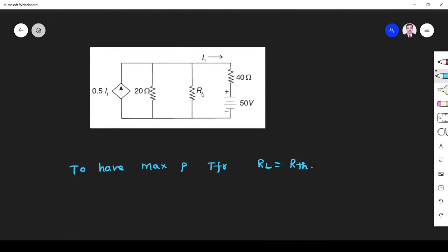So when you want to find R-thevenin, if you have a dependent source here, you see we have a dependent source. Whenever we have a dependent source, how to find R-thevenin? The procedure is: what we have to do is first, as usual, if you have any independent source, short it. So short independent voltage source. If it is current source, we have to open it.